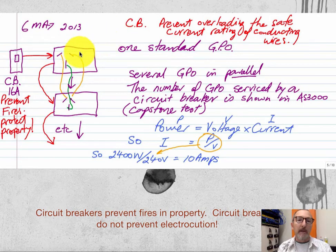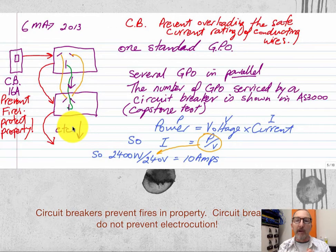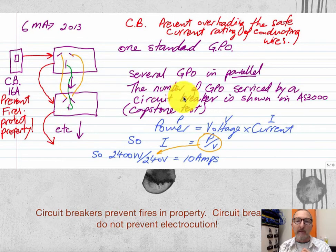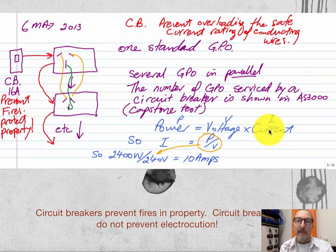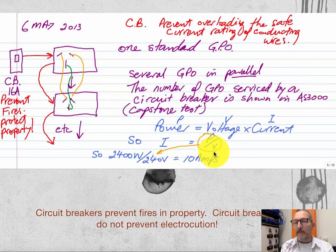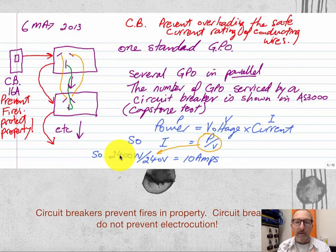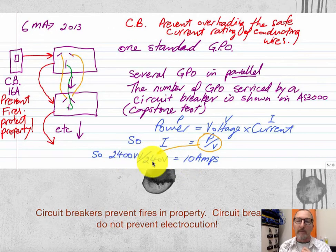Circuit breakers go to not one power point but normally more than one in a daisy-chain configuration — we might have several GPOs in parallel. The number of GPOs serviced by a circuit breaker can be found in the AS3000. Knowing a bit of maths: power in a circuit equals voltage times current, so current equals power divided by voltage. Earlier we had heaters at 2,400 watts with 240 volts supplying them — that's where the 10 amps came from.